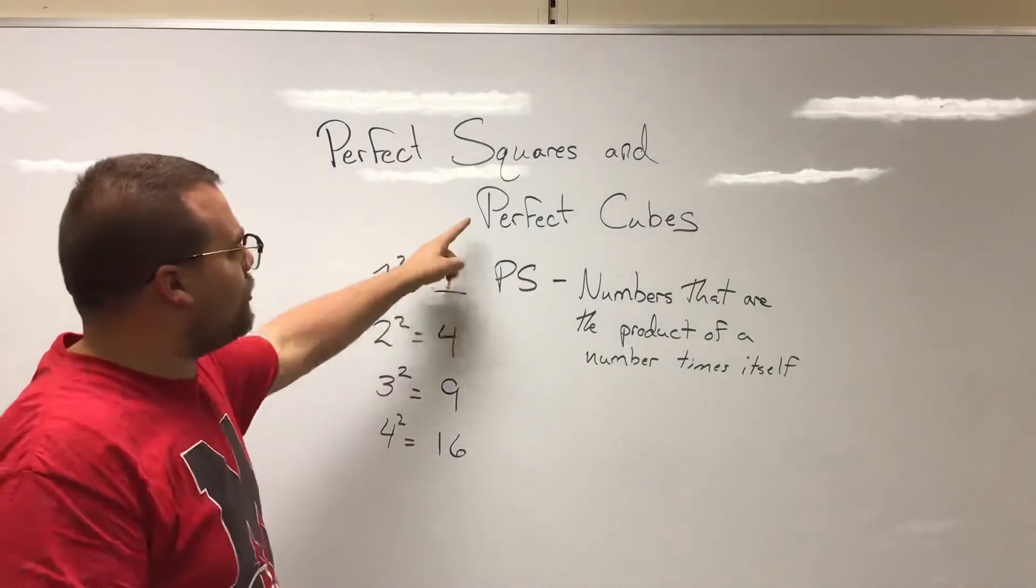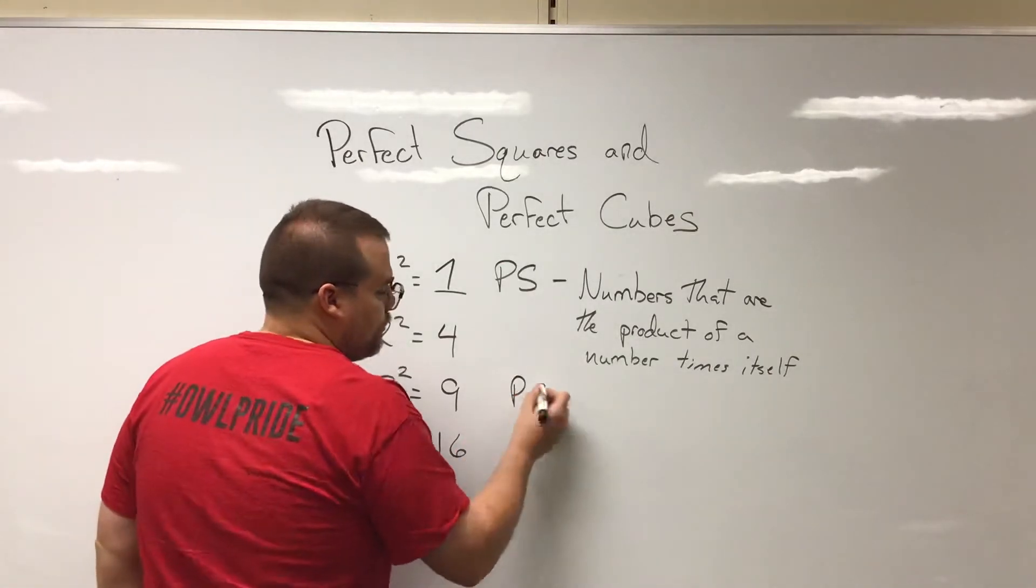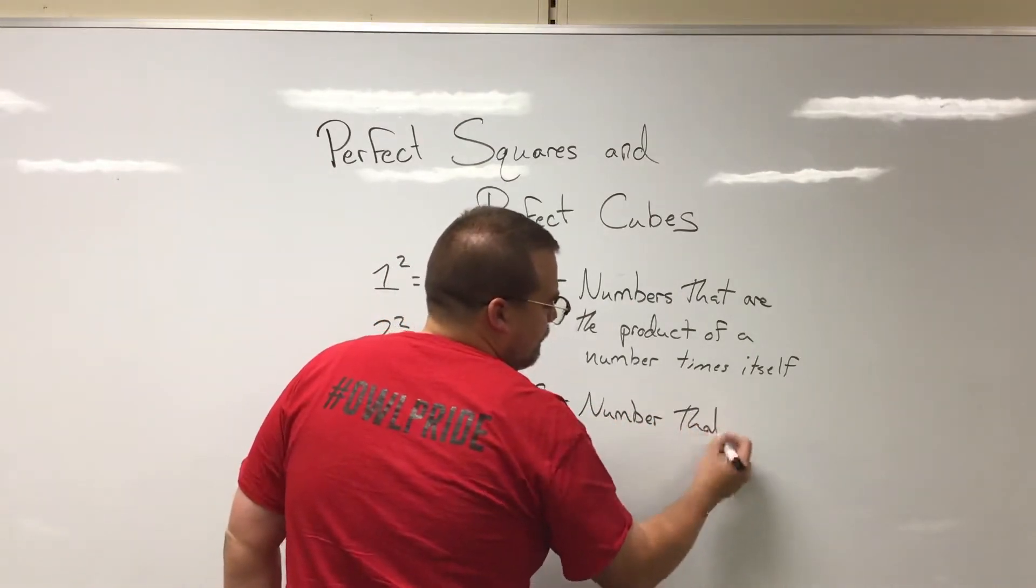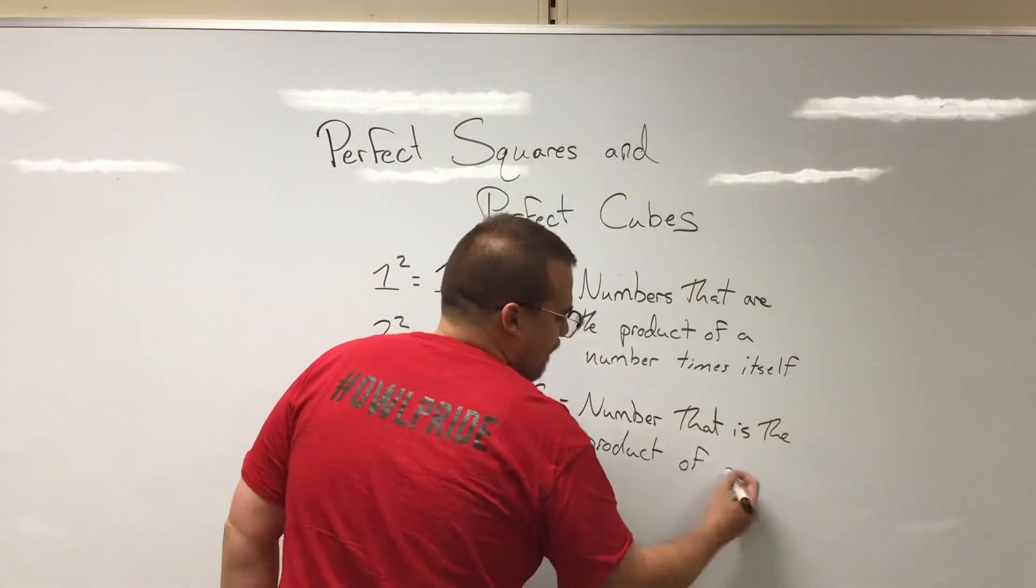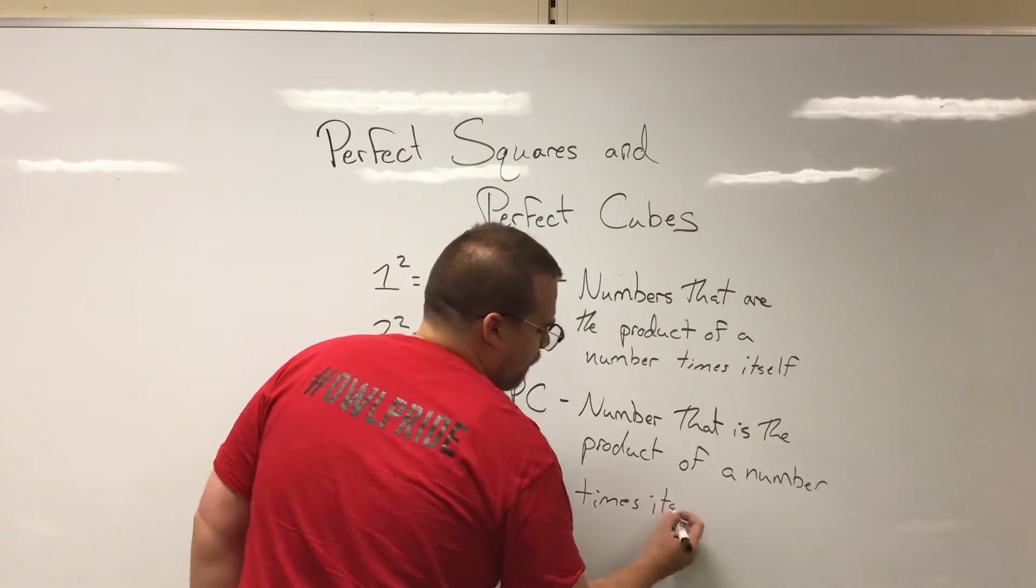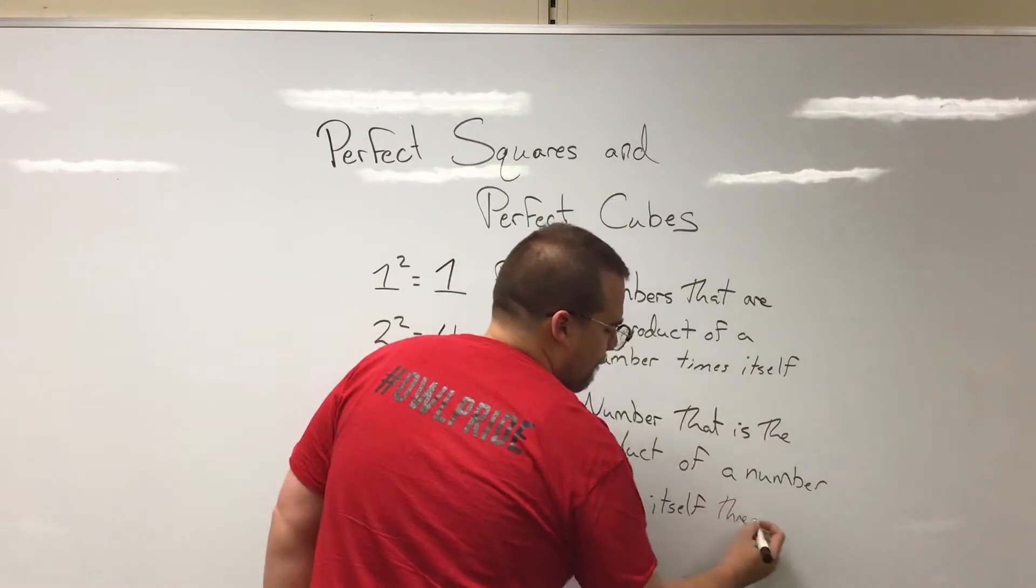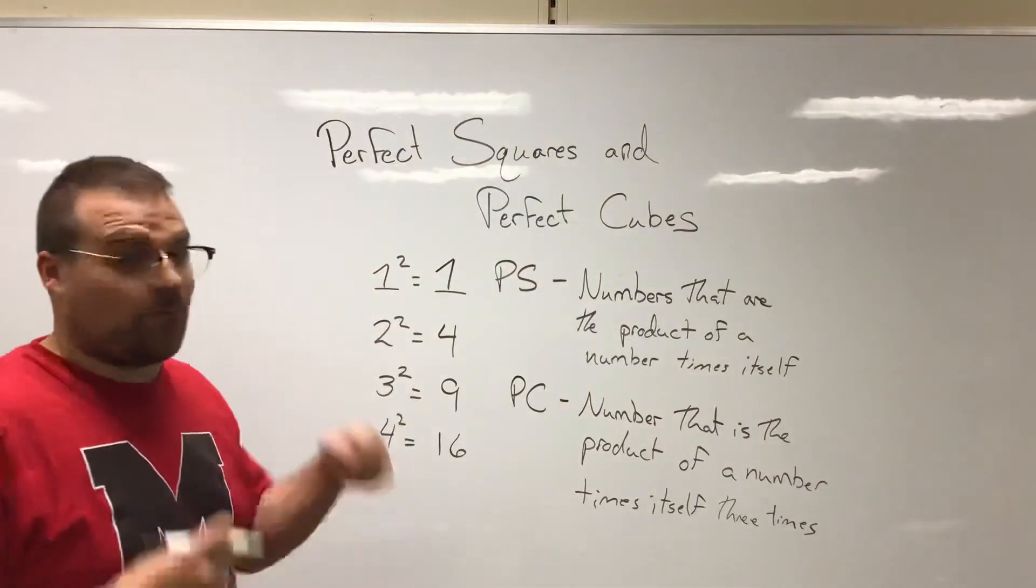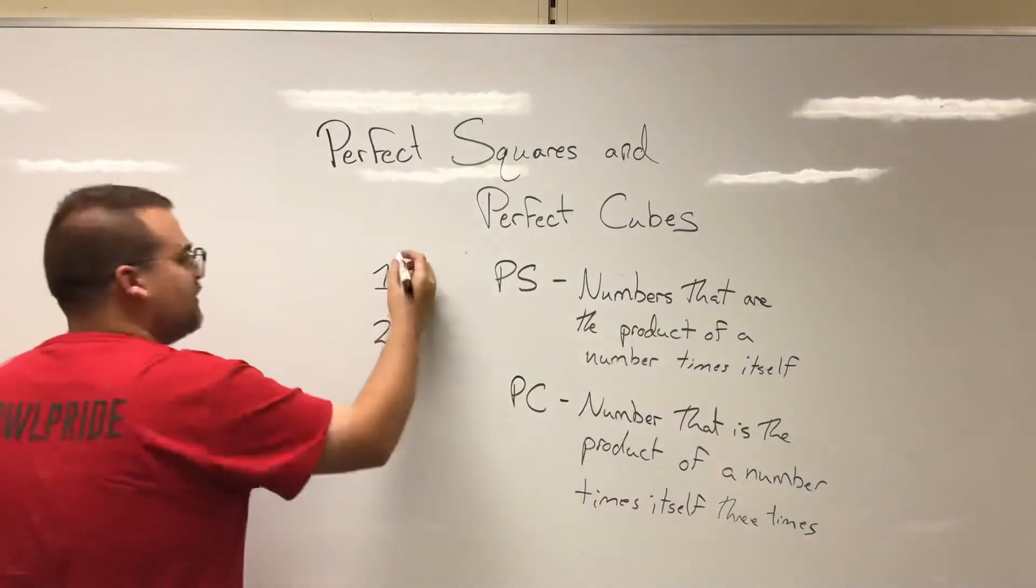Now, a perfect cube is similar but a little bit different. A perfect cube is a number that is the product of a number times itself three times. So what I mean by that is not one squared or one to the second, but one or two or three or anything like that to the third.